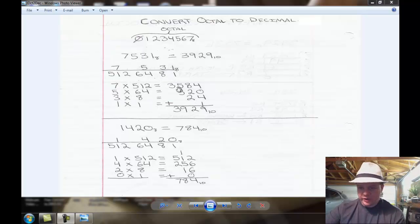As you can see, when we bring it over here, we have 3584, 320, 24, and 1. When you add those numbers all together, you come up with 3929 base 10. That is the equivalent to 7531 in octal.